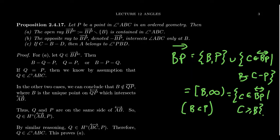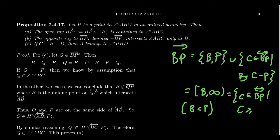Those are two ways of describing rays. This could be called a closed ray because it includes the boundary point B. It's natural to also talk about the open ray BP, which is just the ray BP but with the boundary point removed — meaning we take C strictly greater than B, not equal to B.